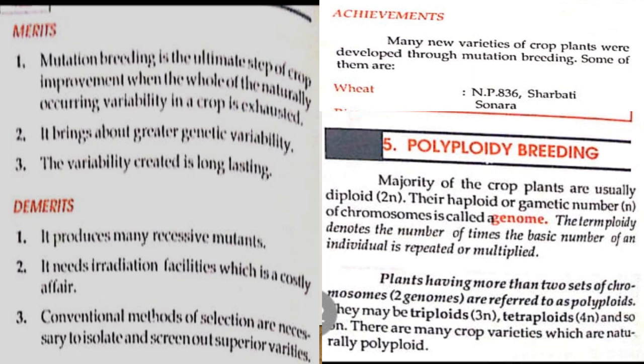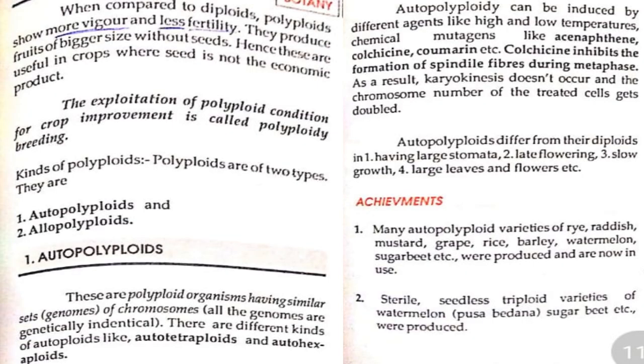Polyploidy breeding: the majority of crop plants are usually diploid. The haploid or gametic number of chromosomes is called the genome. The term polyploidy denotes the number of times the basic chromosome number of any individual is repeated or multiplied. Plants having more than two sets of chromosomes are referred to as polyploids. They may be triploid, tetraploid, or higher.